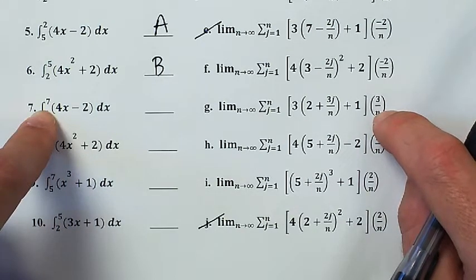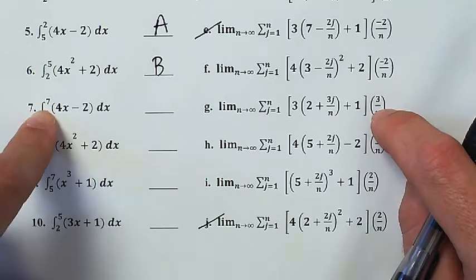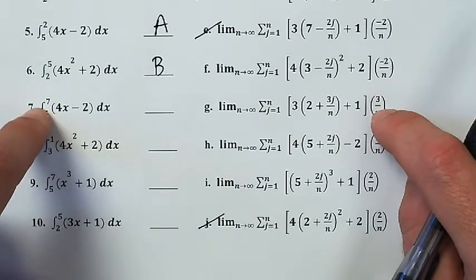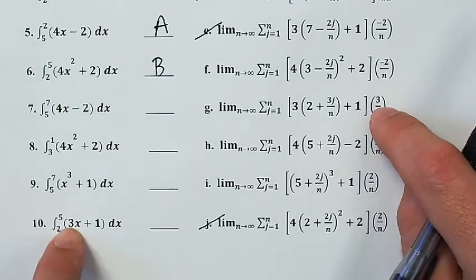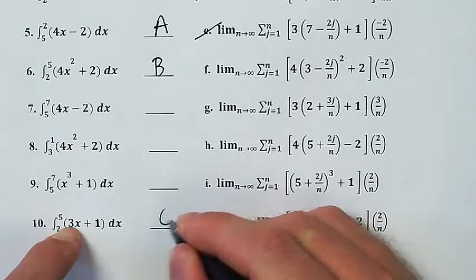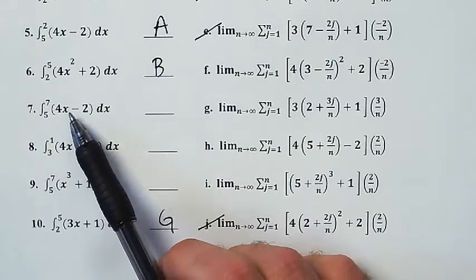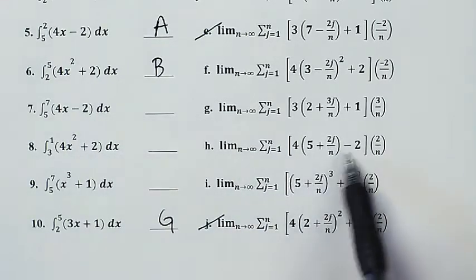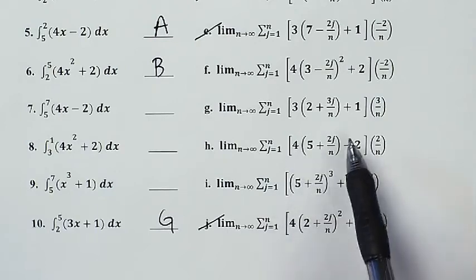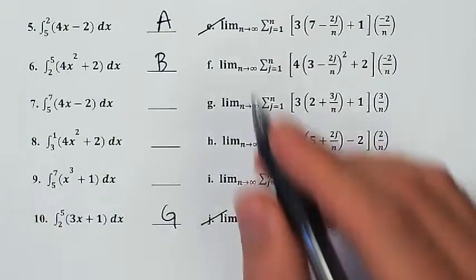3x + 1 from... Where is the other 3x + 1? From 2 to 5. That's this one. Where is 5 to 7 of 4x - 2? Ah, here it is, h. Yeah, there it is. Starts at 5, has a width of 2, 4x - 2. So 7 is h.